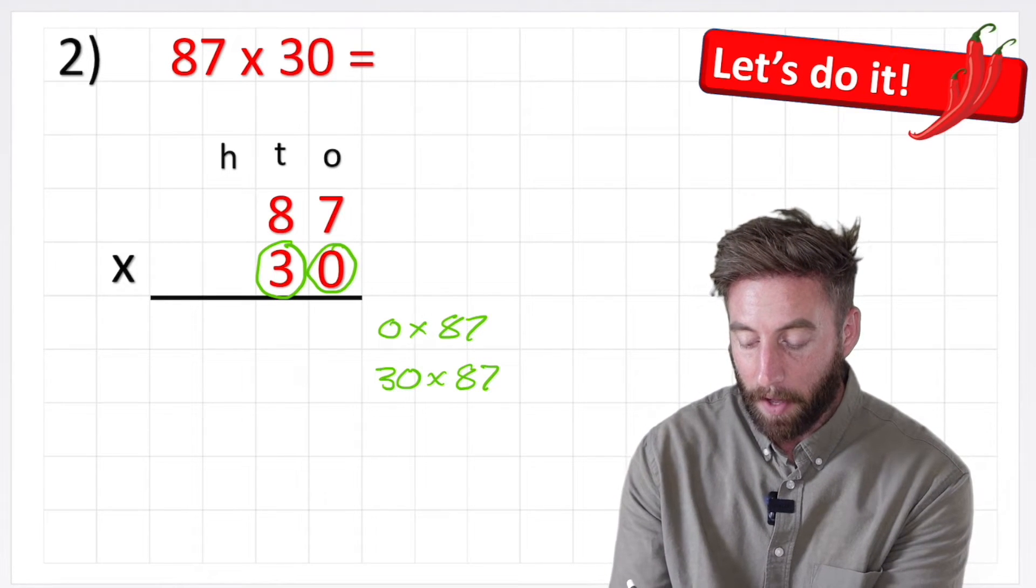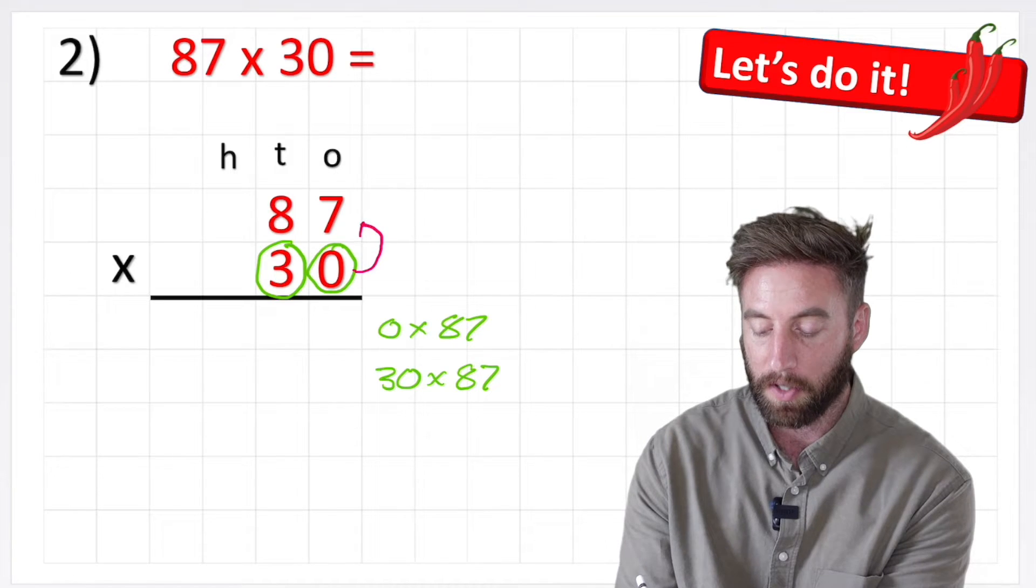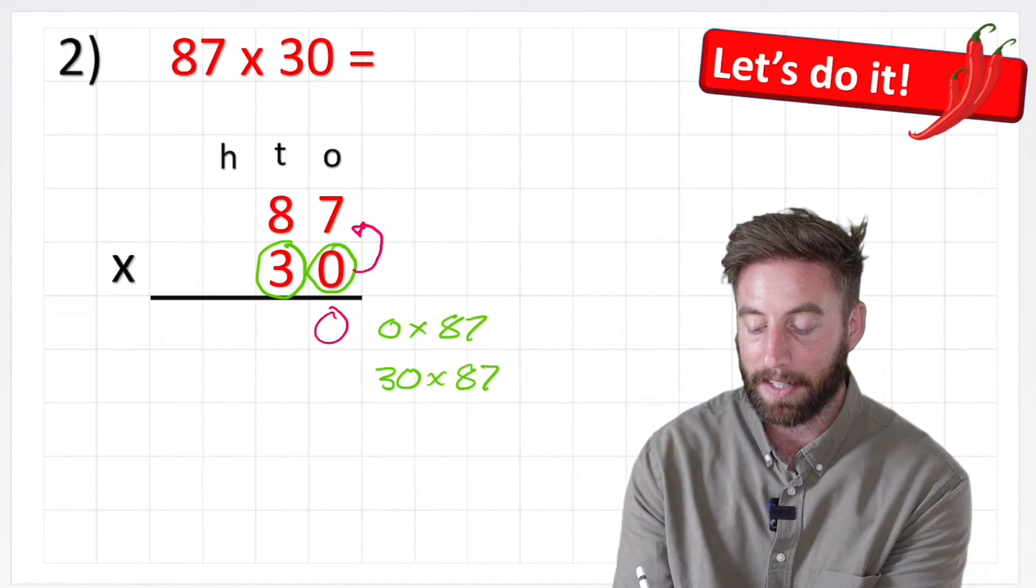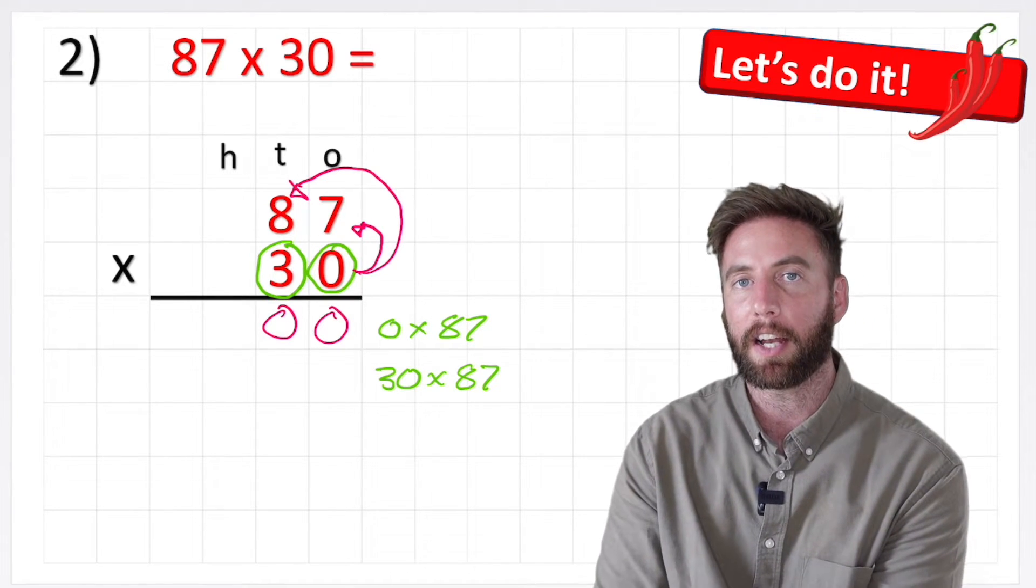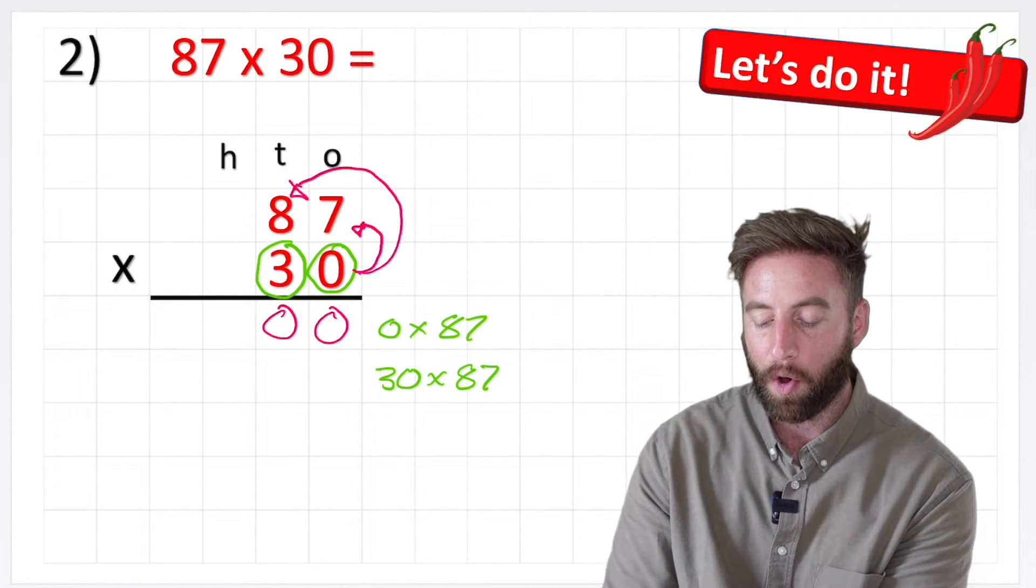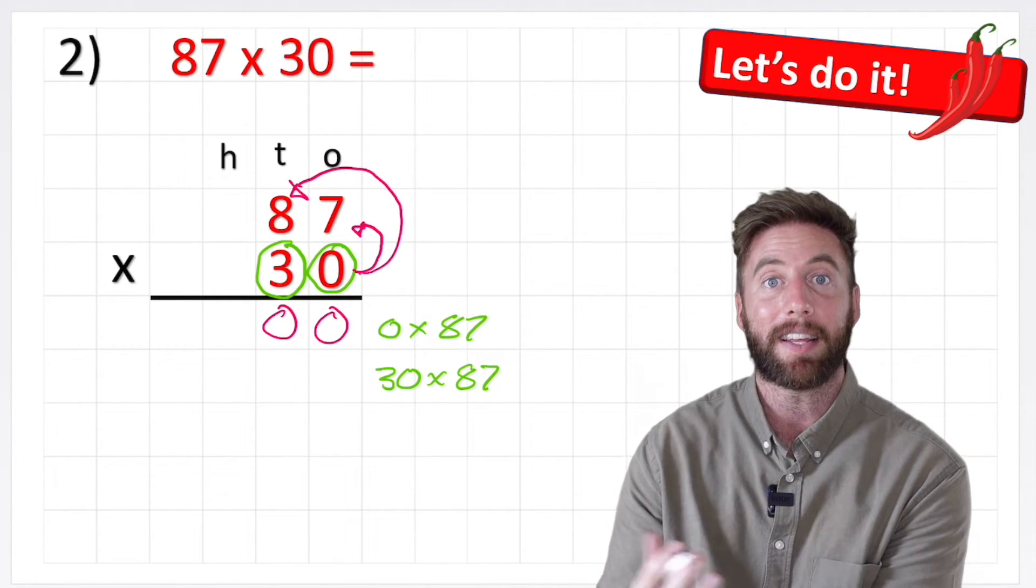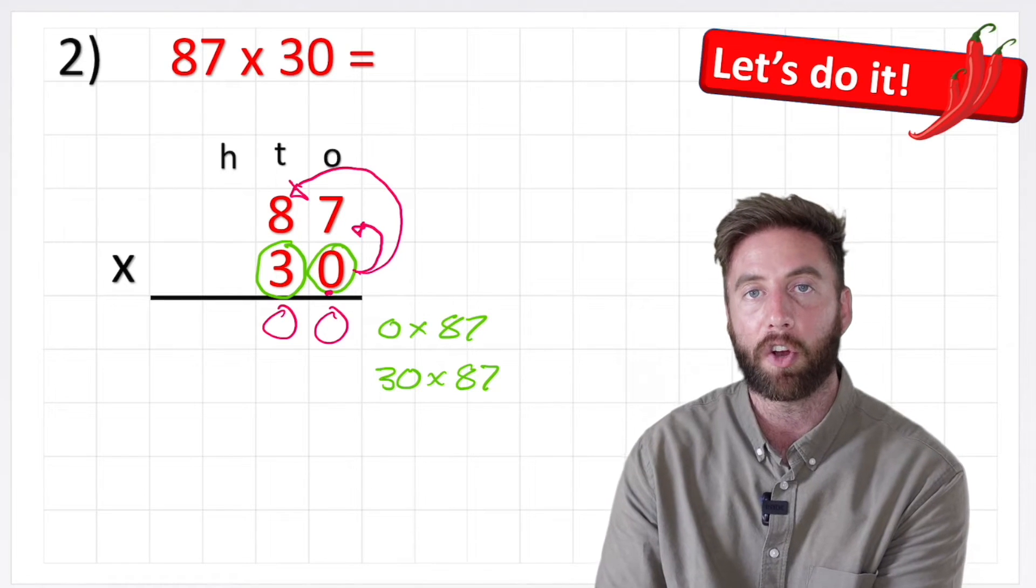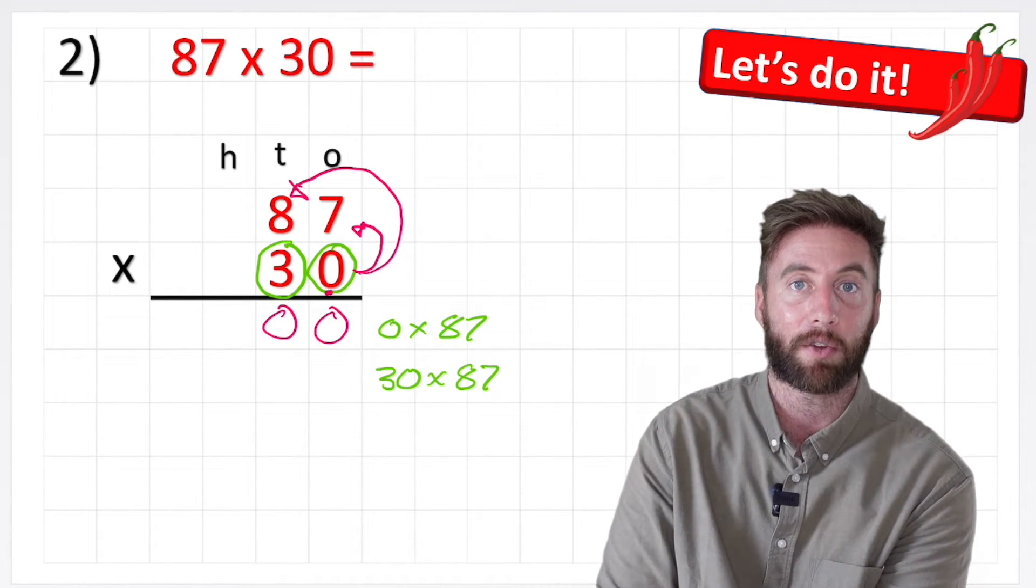Now I'm ready to start and I'm going to do the smallest value by the smallest value, so 0 times 7 is 0 and 0 times 8 is also 0. That's a little funny isn't it? So our whole row of answers ends up with 0. Well that is because 0 times 87 is 0. So having this little 0 here can look a bit more confusing, but actually it just means that first row will end up being the value of 0.